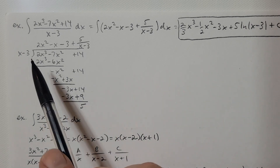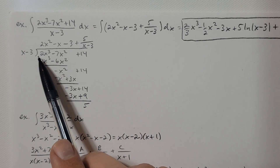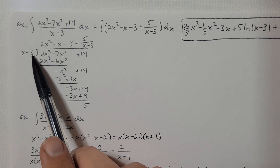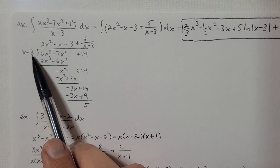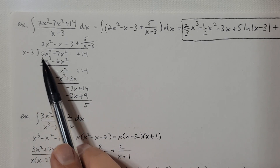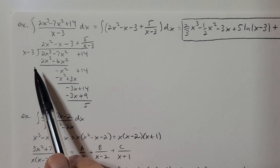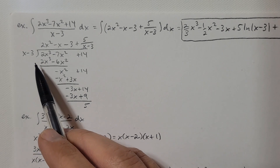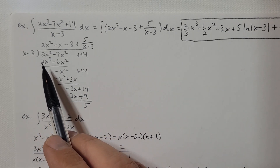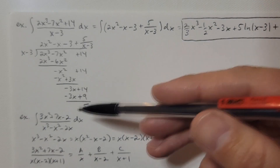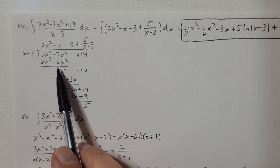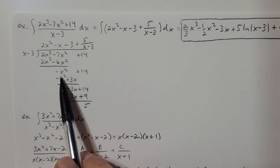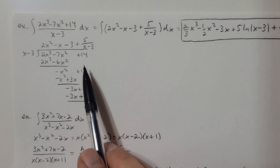Ready to divide. I need an expression such that the leading term is 2x cubed when I multiply it by x minus 3. If I take 2x squared times x minus 3, that's 2x cubed minus 6x squared. Now this is a common algebra mistake — make sure that you're subtracting these. So 2x cubed minus 2x cubed, those are gone. Negative 7x squared plus 6x squared is negative x squared. And then 14 minus 0 is 14.